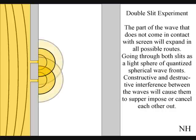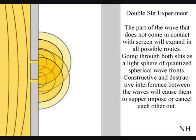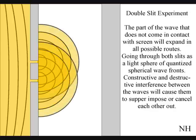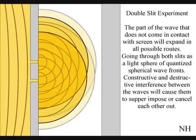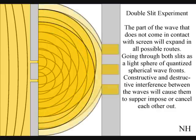The part of the wave that does not come in contact with the screen will expand in all possible routes, going through both slits as two light spheres of quantized wave-fronts. Constructive and destructive interference between the waves will cause them to superimpose or cancel each other out.